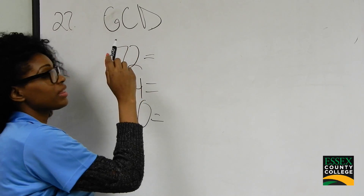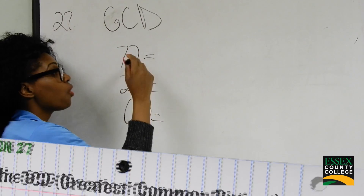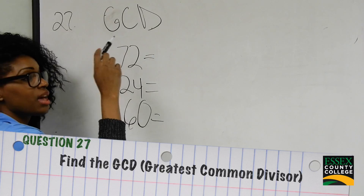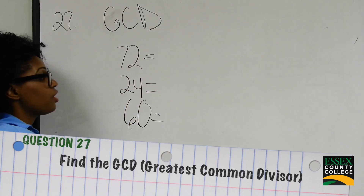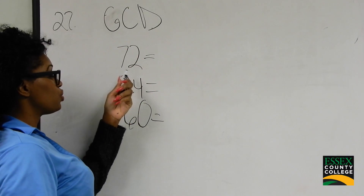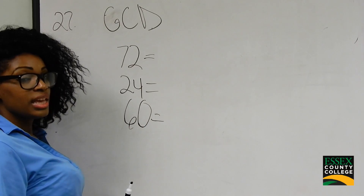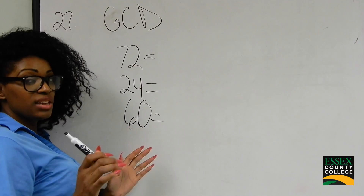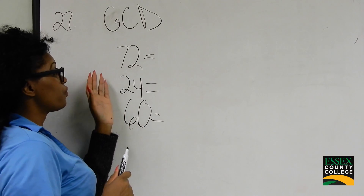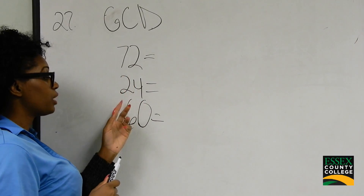For number 27, we're trying to find the greatest common divisor, better known as the greatest common factor. We're trying to find a number that when you divide it into 72, 24, and 60, it goes in evenly. It has to be the greatest number, so we're going to do factorization for 72, 24, and 60.